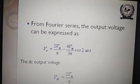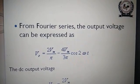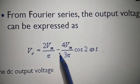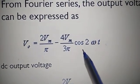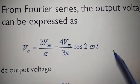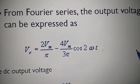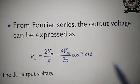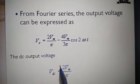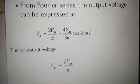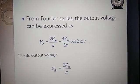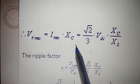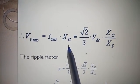From the Fourier series, the output voltage can be expressed as V₀ = 2Vm/π − (4Vm/3π)cos(2ωt). All other higher-order components are removed because they consist of very small ripple, so there is no need to write those components. The DC output voltage VDC = 2Vm/π as we have already seen. The Vrms equals the RMS current into Xc, because the output is taken across the capacitor.